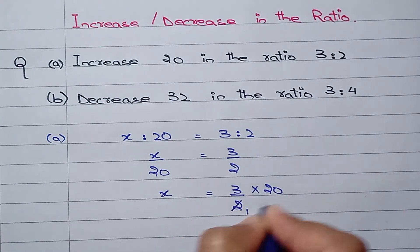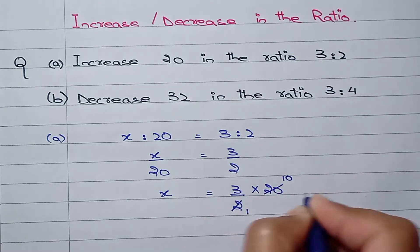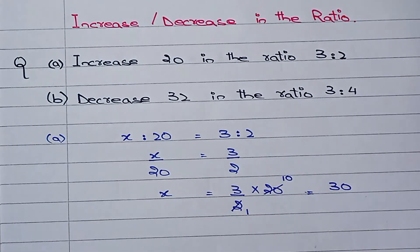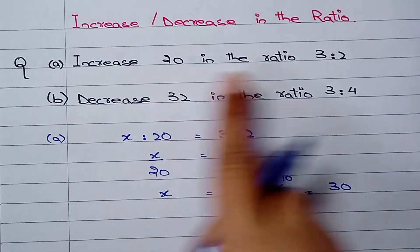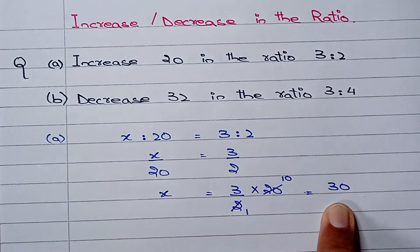2 times 1 is 2, 2 times 10 is 20, and 3 times 10 is 30. So we can say that increase 20 in the ratio is 30.